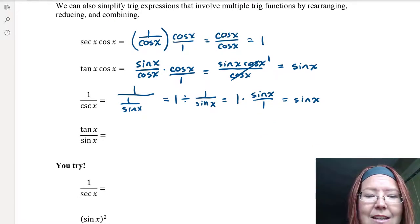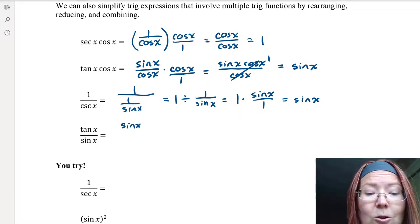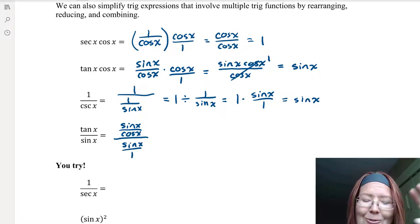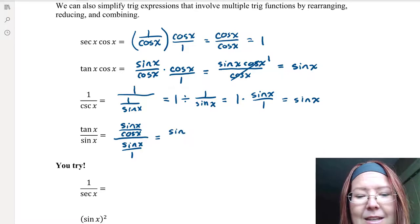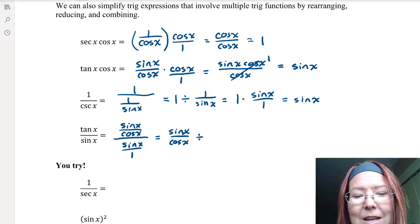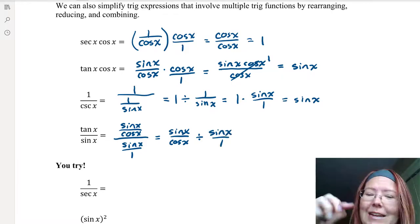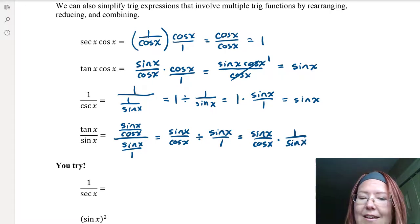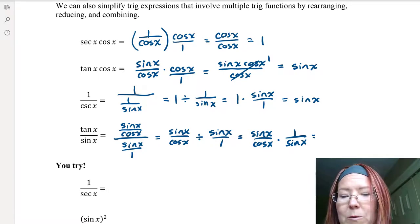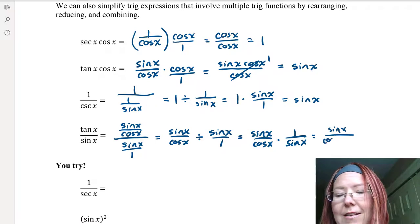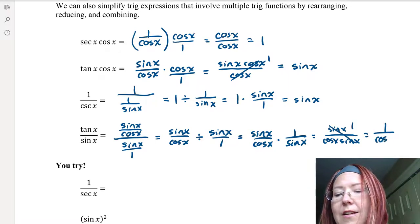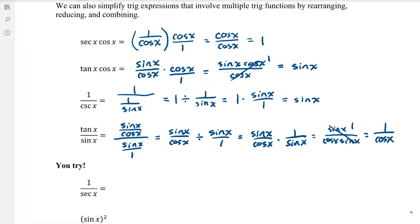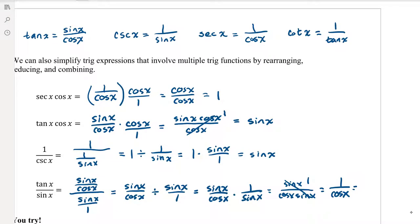Now let's try tangent x over sine x. We rewrite tangent x as sine x over cosine x, all over sine x, which we can write as sine x over 1. So we have a fraction over a fraction: sine x over cosine x divided by sine x over 1. Inverting and multiplying gives sine x over cosine x times 1 over sine x. The sine x's reduce, leaving 1 over cosine x, which equals secant x.